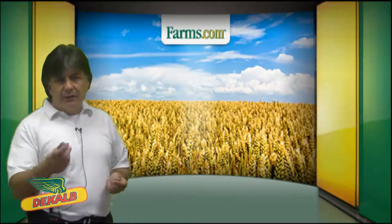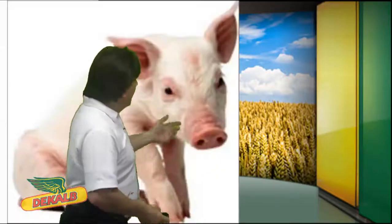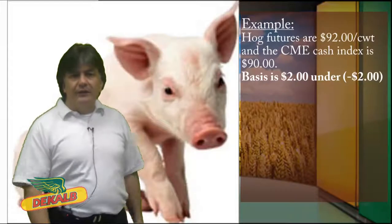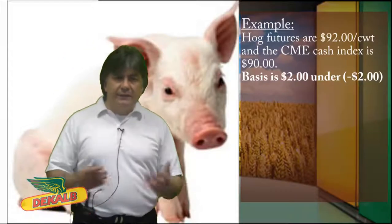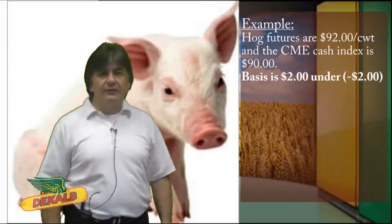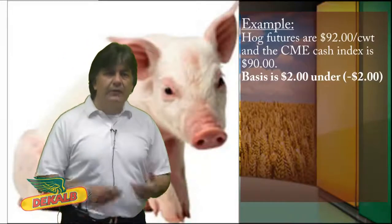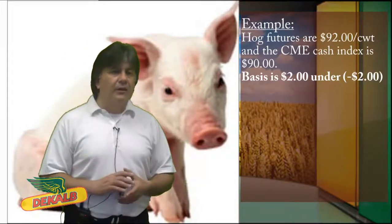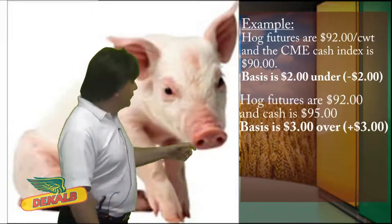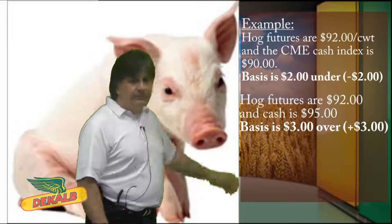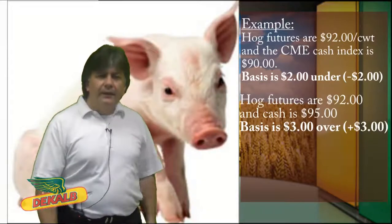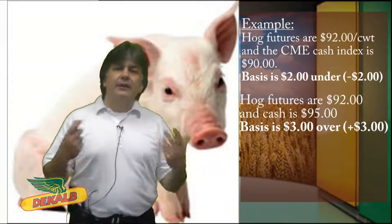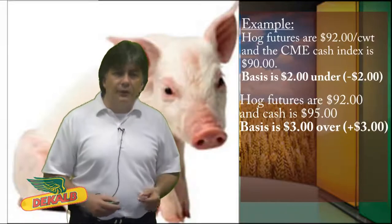Let's go through an example. With this hog example, if futures are 92 and the CME cash index is 90, then we've got a basis that is two under. If hog futures are 92 and the cash is 95, then you've got $3 over.